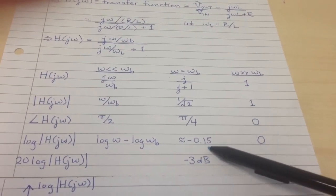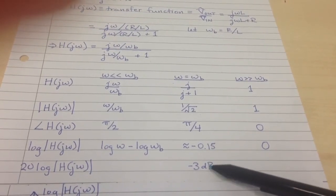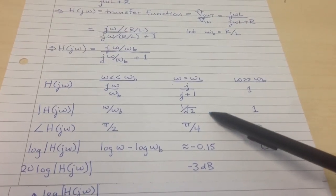That minus 0.15 in the log of the ratio corresponds to 3 dB, and corresponds to 1 over square root of 2 in terms of the actual ratio of the input and the output.